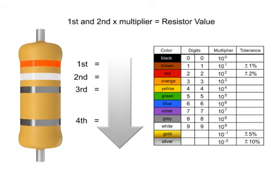In this example, the first band is orange, so the first digit is 3. The second band is white, so digit 2 is 9.